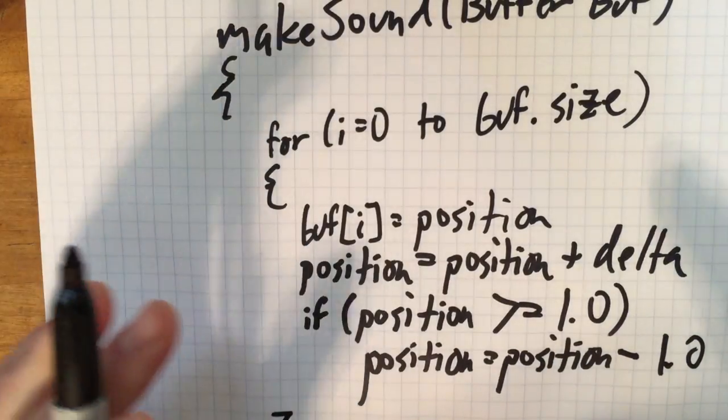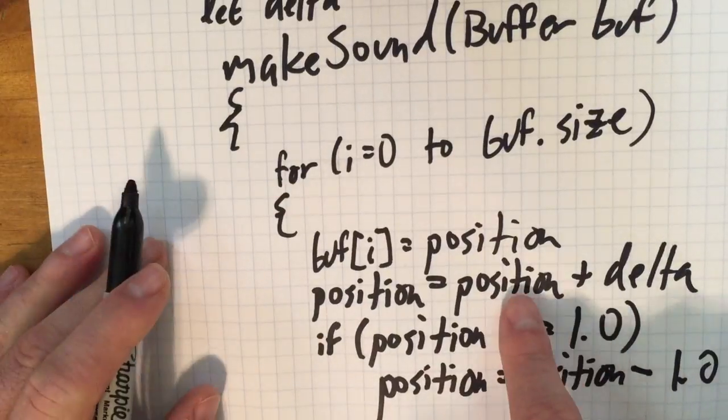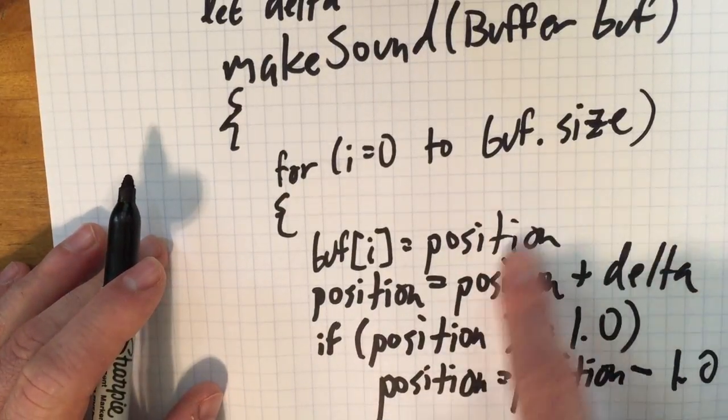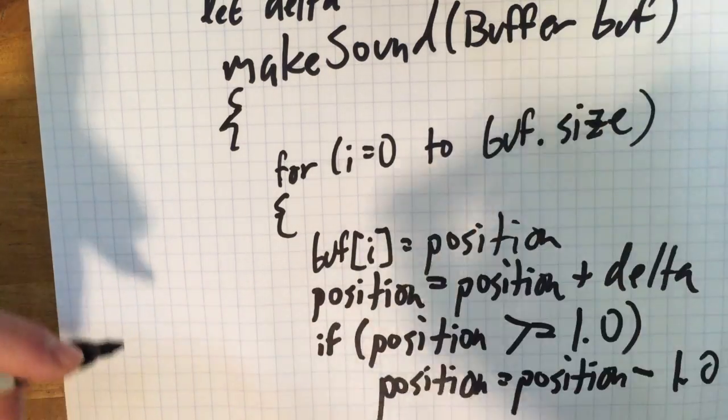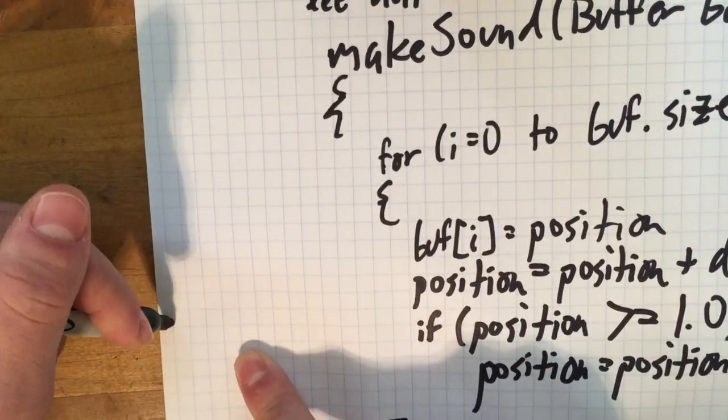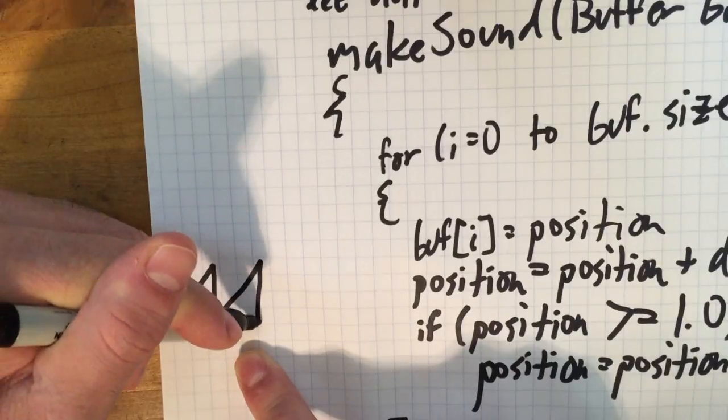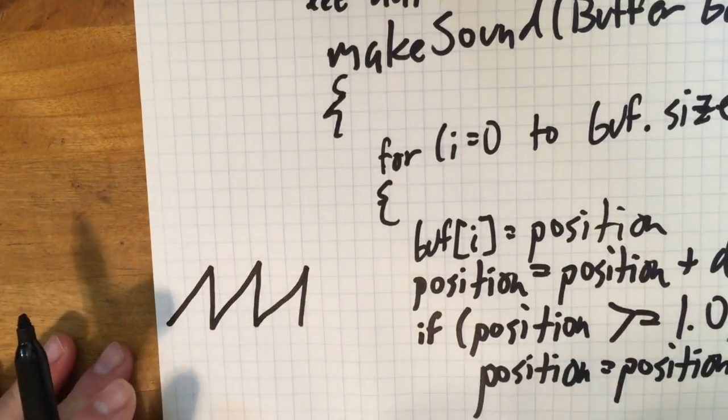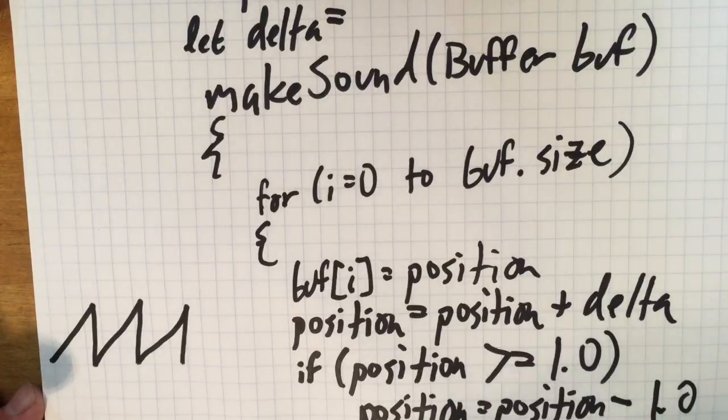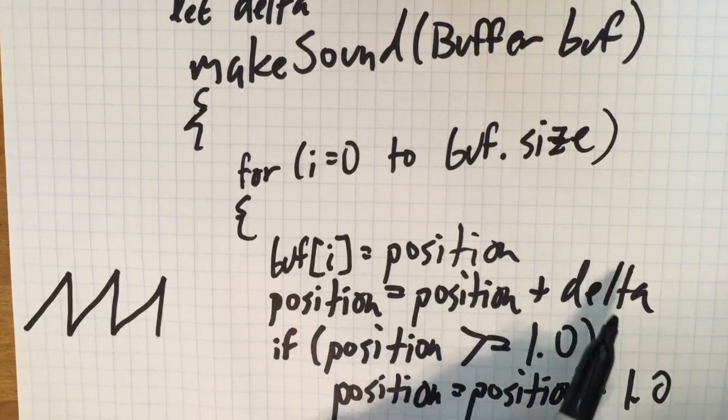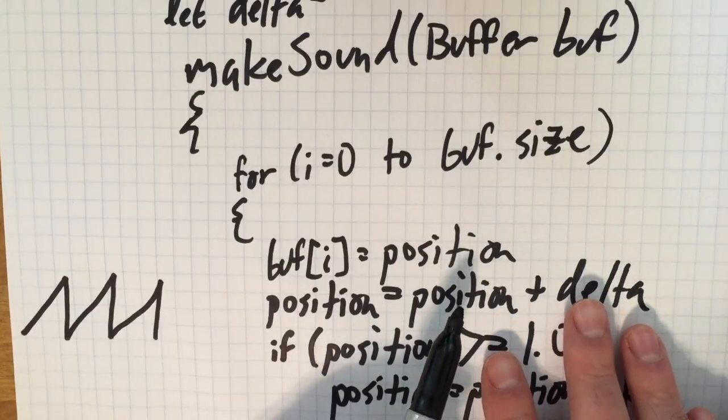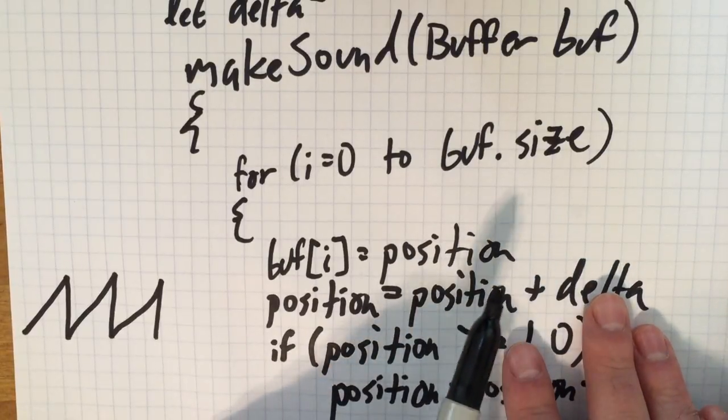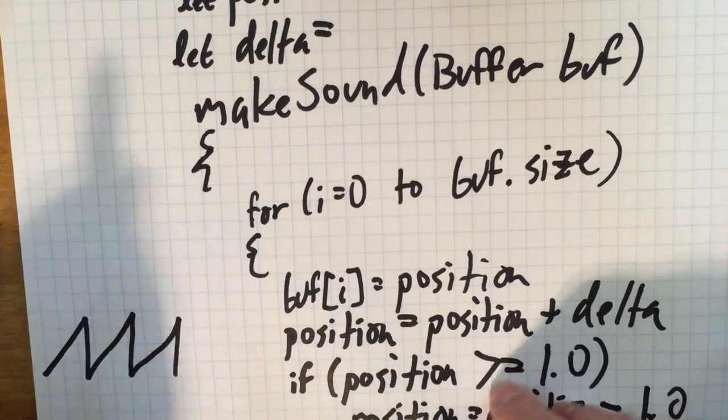Okay, so what we have is a sawtooth. As we go through the buffer, we're kind of advancing this position, advancing it, reset, reset, reset. And it's going to produce something that kind of looks like this - it's a sawtooth wave. And the pitch is determined by this delta. So every sample we're incrementing our position by so much. So how do we figure that out?